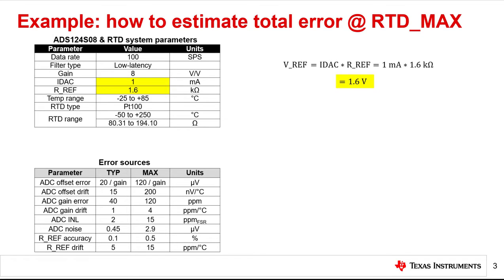First, we need the reference voltage Vref. This value is the product of the IDAC current and the Rref resistance, which is 1.6 volts. One important note about this calculation, as well as subsequent calculations, is that we are using the ideal absolute IDAC current to keep the analysis simple. In practice, the measured voltage could be slightly higher or lower depending on actual IDAC current, but this is acceptable because we are trying to estimate the total error.